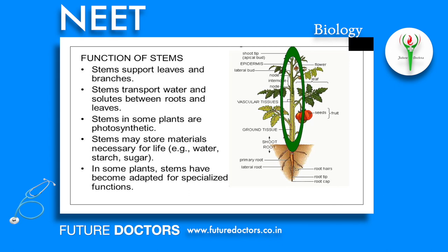Secondary functions: Many stems store food as reserve food materials. Some stems also help in photosynthesis and vegetative propagation. Underground stems help in perennation. Stem branches provide support to various parts. Stems transport water and solutes between roots and leaves. Stems may store materials such as water, starch, and sugar. In some plants, stems have become adapted for specialized functions, including photosynthesis.